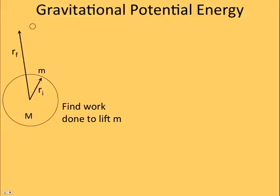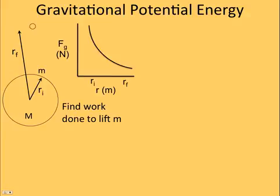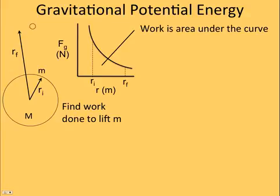So we want to find the work done to lift it. If we do a graph of force of gravity versus R, we get a curve, and to get the work done, we know that's the area under the curve. You can estimate it - you've got one trapezoid, and that would sort of work.